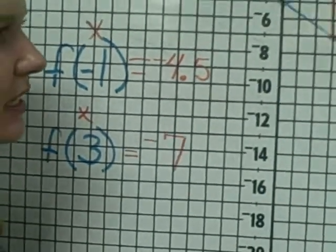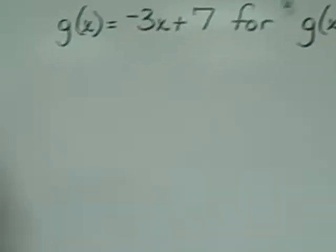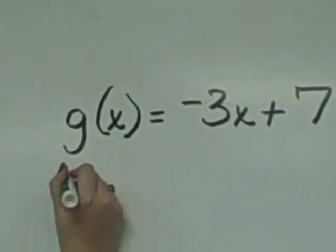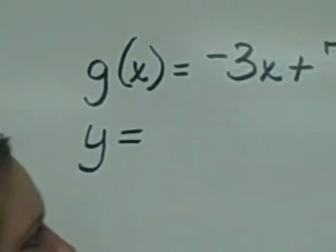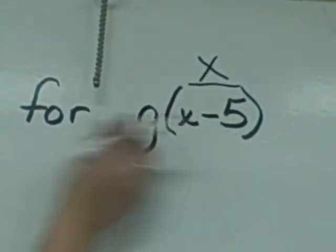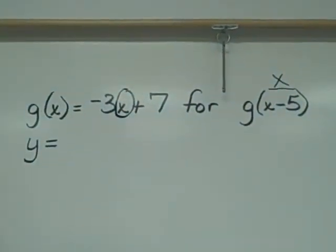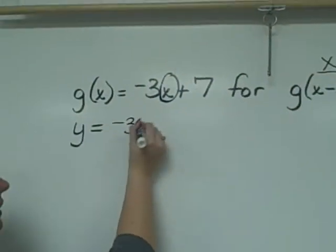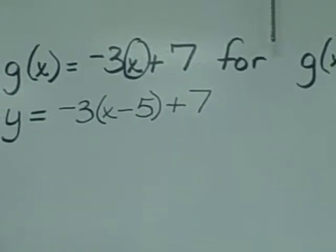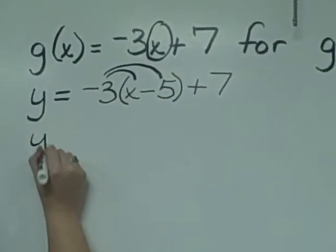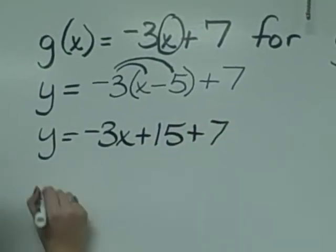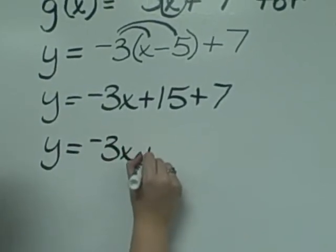The last place we can look at function notation is evaluating expressions. Again, sometimes instead of f of x you may see g of x. It means the same as y. We would have y equals, and then if you look here, we've got g of x minus 5. This is in the same spot the x would normally go. So in our expression right here, we're going to take that x and replace it with x minus 5. We have negative 3 times x minus 5 plus 7. We simplify this expression by distributing first. We get y equals negative 3x plus 15 plus 7. This gives us a final of negative 3x plus 22.